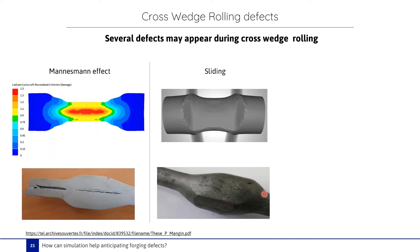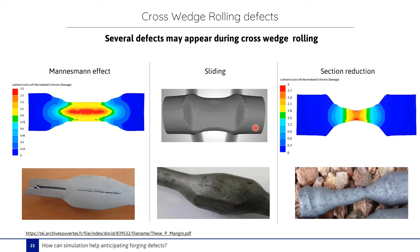In Simulation 2, the cross wedge rolling tool parameters lead to a sliding defect. Analyzing the form of the final part obtained by numerical simulation, the sliding defect is present. In Simulation 3, the cross wedge rolling tool parameters lead to section reduction — we can see how the initial diameter goes from 22 to 11.5 millimeters. At the center, a critical value of Latham-Croft higher than 2.7 is present, which may indicate breaking of the part.